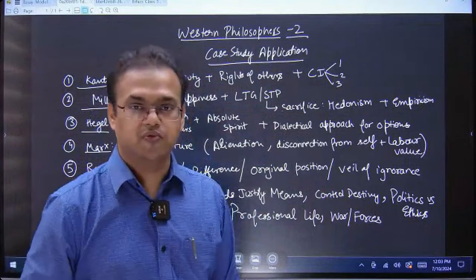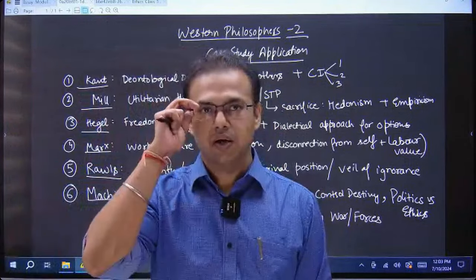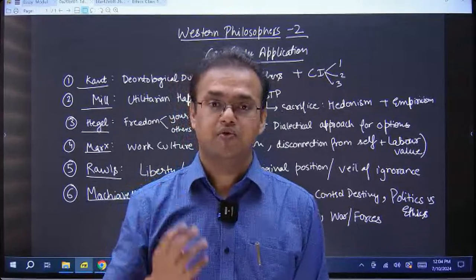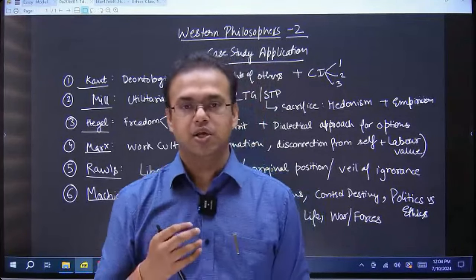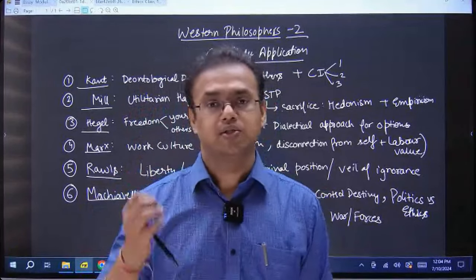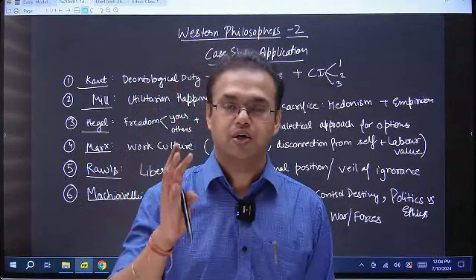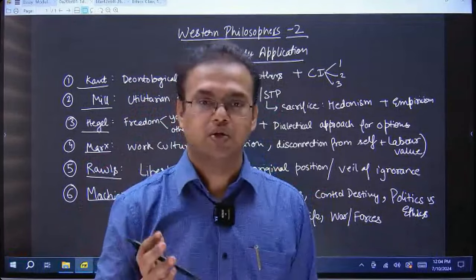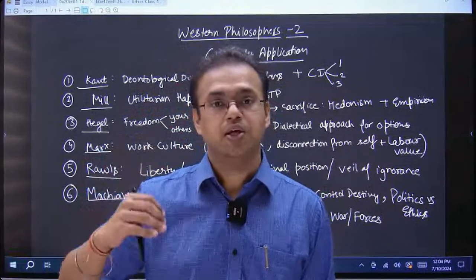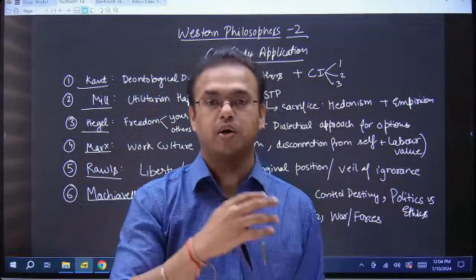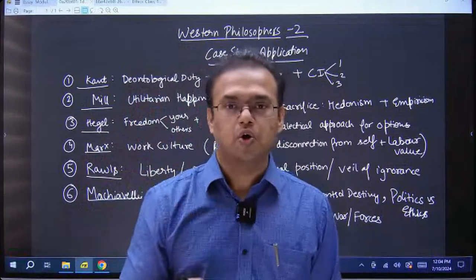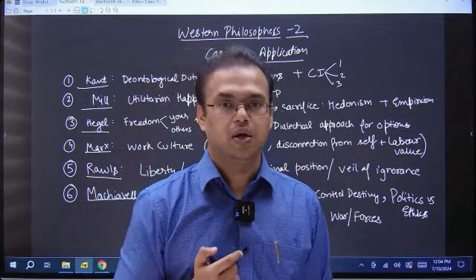CI3 is Autonomy and Kingdom of Ends. Not many are able to use this in their answers. It states that there is a hypothetical state worried about rights of every individual, and you are one of the citizens. You have to act in a way that your action can become a law of such a good state. Any action that cannot be accepted as a law in this state will be unethical with respect to CI3.